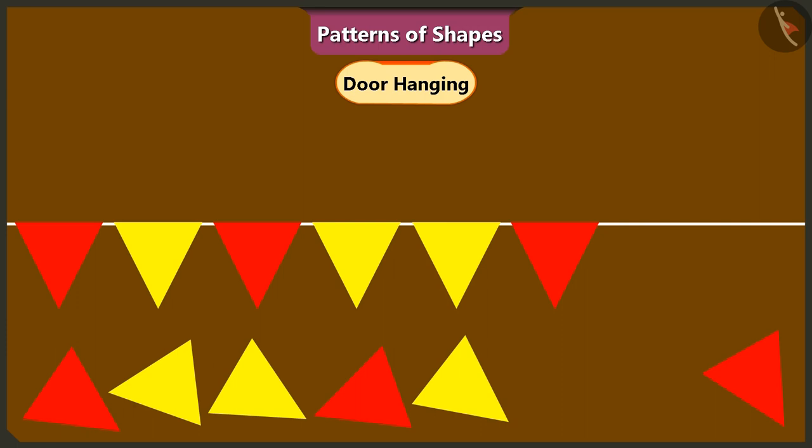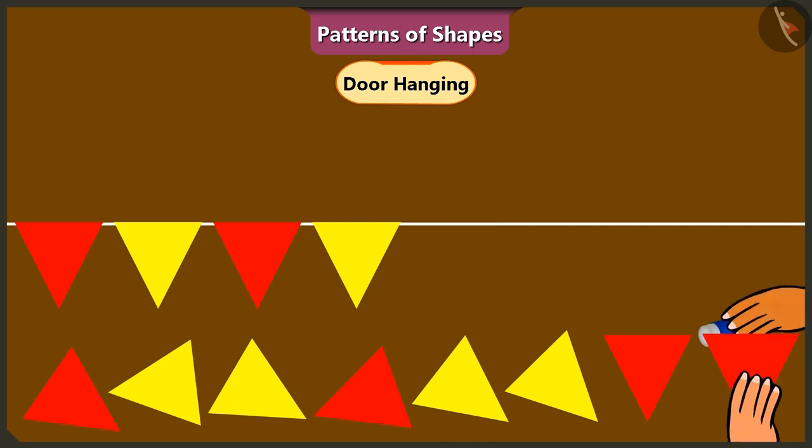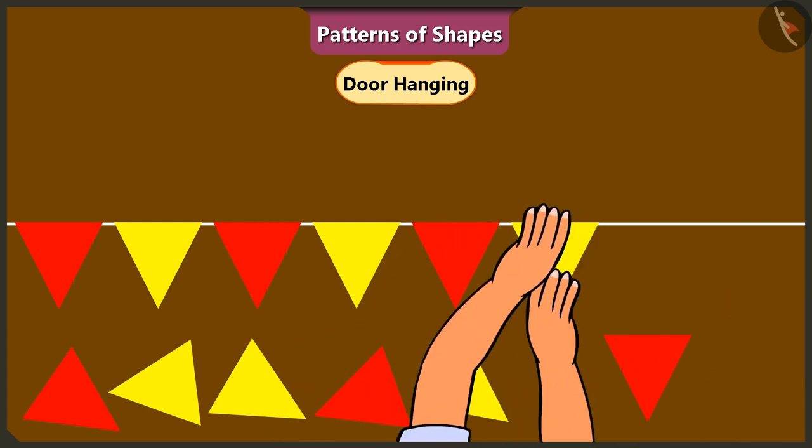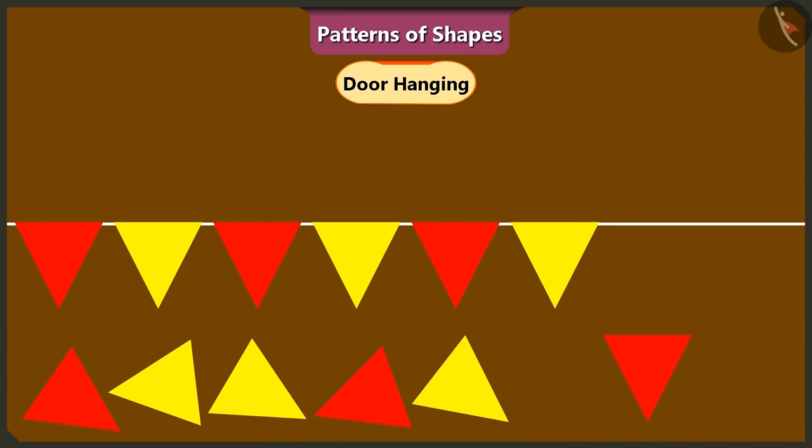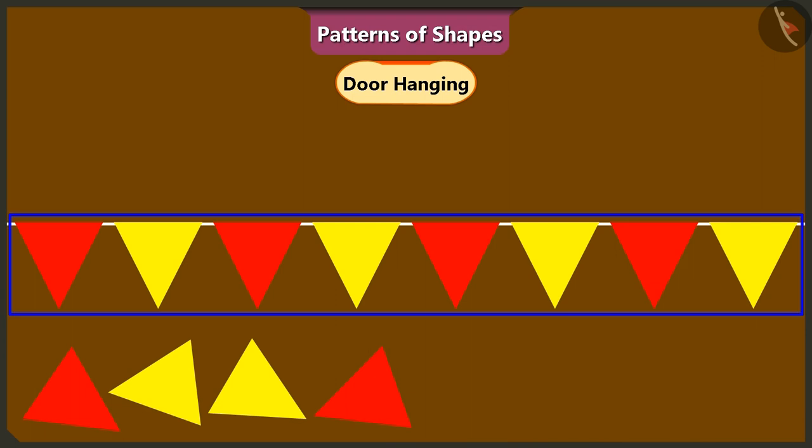Let's get these triangles out and put them in the right order to make this toran. Yes, I will put a red triangle in fifth place and a yellow triangle in sixth place like this. Now, let us keep repeating this pattern of triangles, first red and then yellow. Awesome! Both of you have done such a good job with the toran.